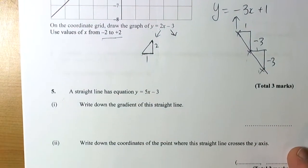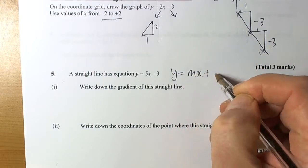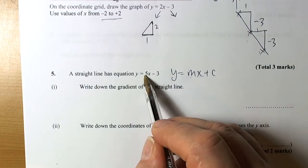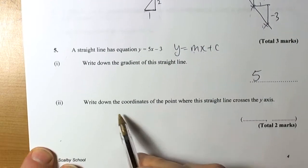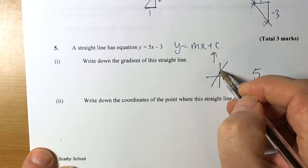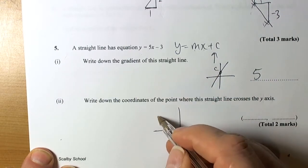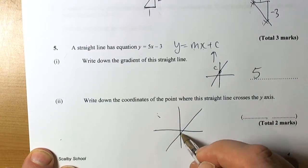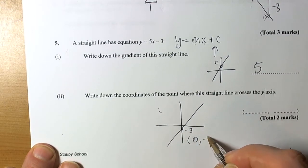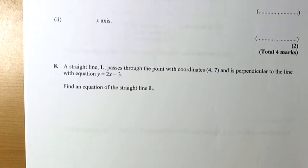A straight line has equation y equals 5x minus 3. Write down the gradient: the gradient is always the coefficient of x, which is 5. Write down the coordinate where the line crosses the y-axis: the c value gives the intercept coordinate. With intercept of negative 3, the coordinate is (0, negative 3).